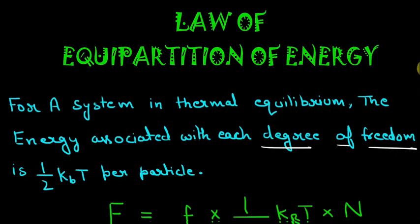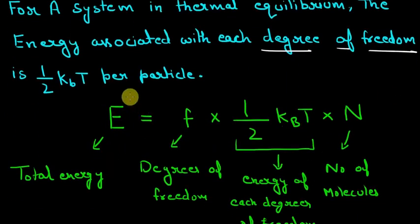So now to summarize this in a formula the total energy of a gas is equal to the degrees of freedom for one molecule multiply by the total number of molecules multiply by half kBT which will give us the total energy.